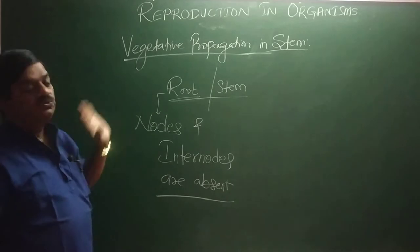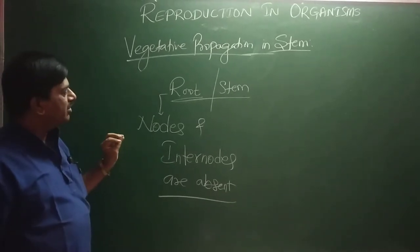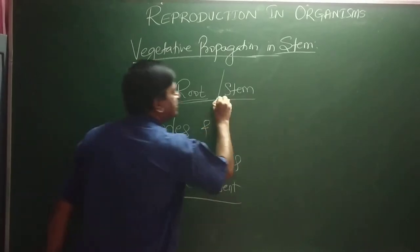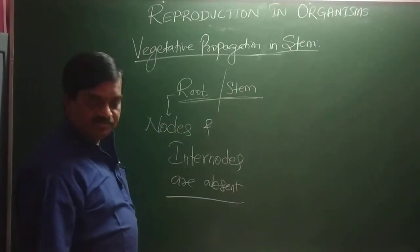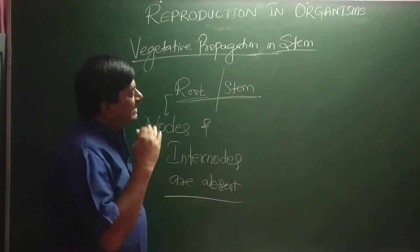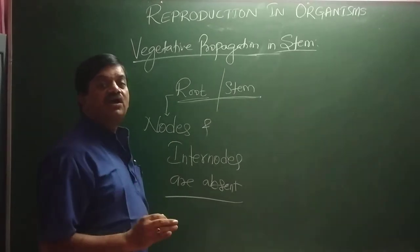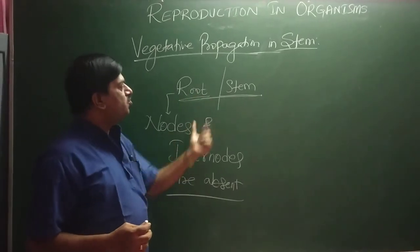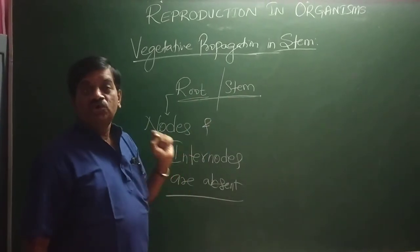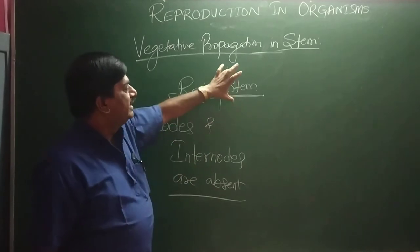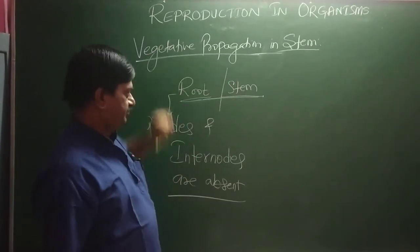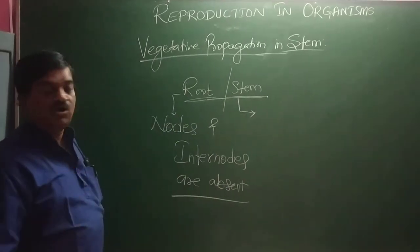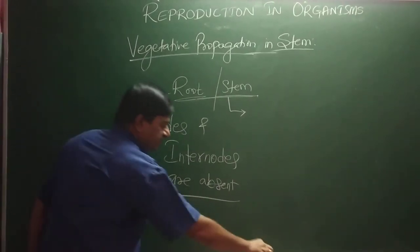By this major character — the presence or absence of nodes and internodes — we are going to identify whether it is a root or a stem. Majority of stems are aerial; they are away from geotropism, whereas roots are geotropic. Stem is always phototropic and moves towards light. Stems have the presence of nodes and internodes.